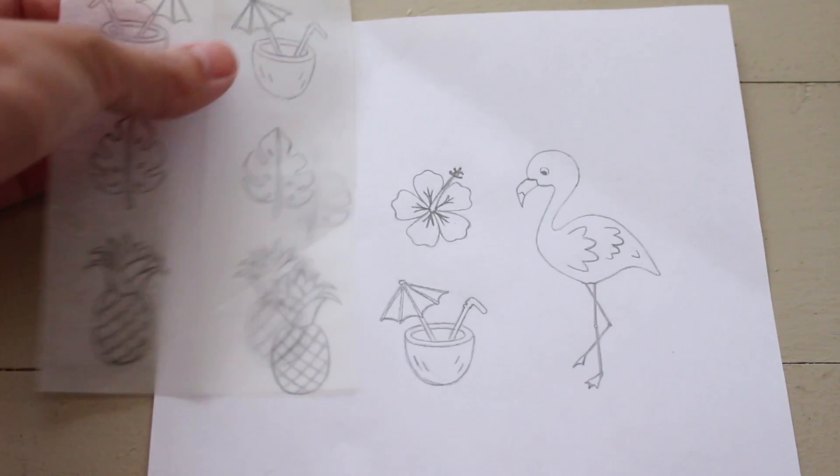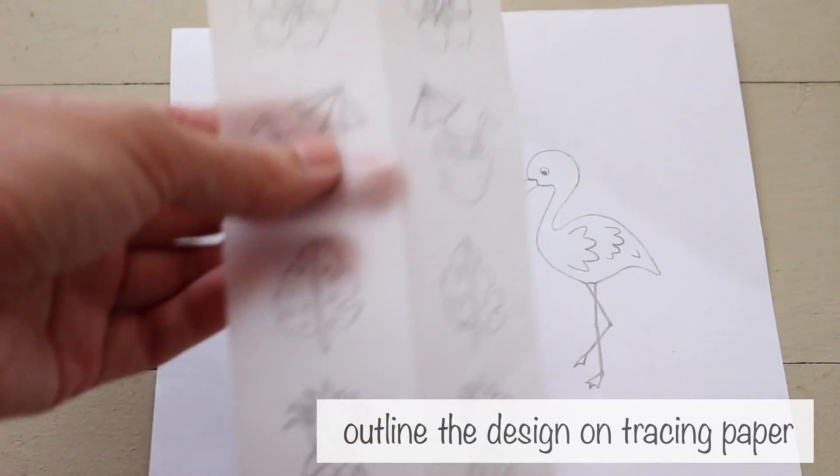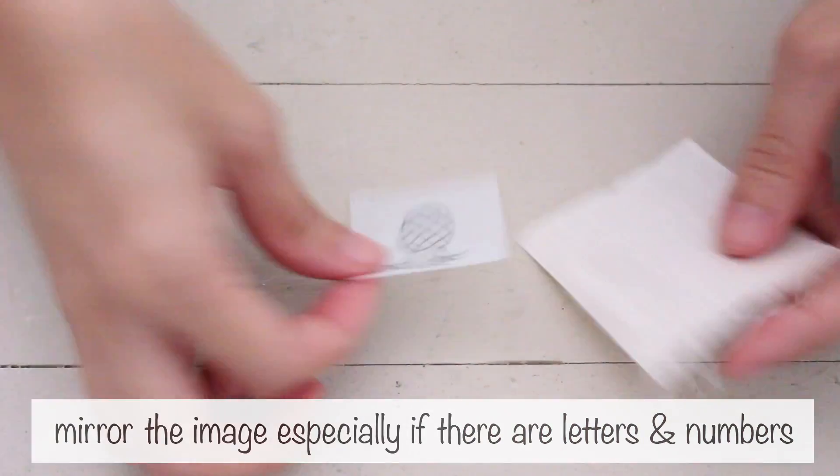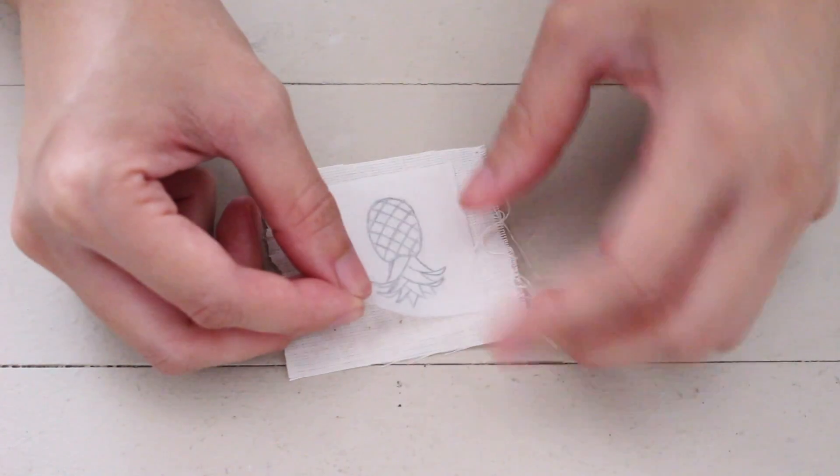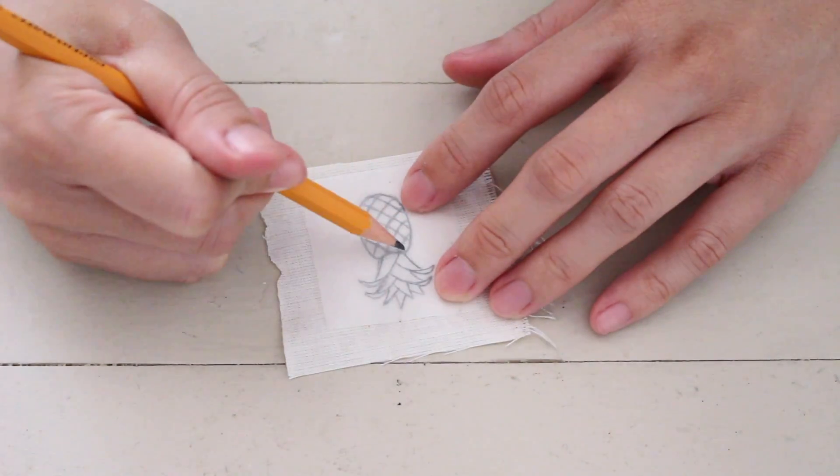First, transfer your design onto the fabric. To do this, I outlined my drawing on tracing paper. Then, I went over the back of the tracing paper to get a mirrored image of my design. Next, turn it over. Go over your design with a pencil and it'll transfer.